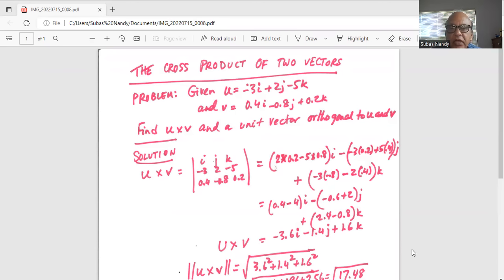So u cross v, again we write i, j and k in the top row. In second row the directional numbers of u which is minus 3, 2 and minus 5. Third row direction numbers of v which is 0.4, minus 0.8 and plus 0.2.